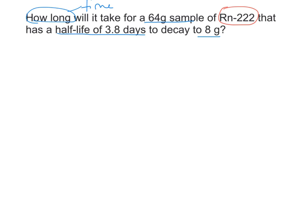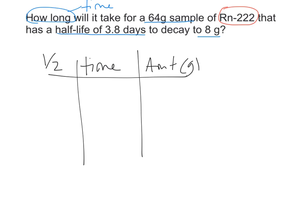I'm going to build my table with half-life, time in days, and amount in grams. You always start with zero for half-life and zero for time and the full amount which is sixty-four grams.